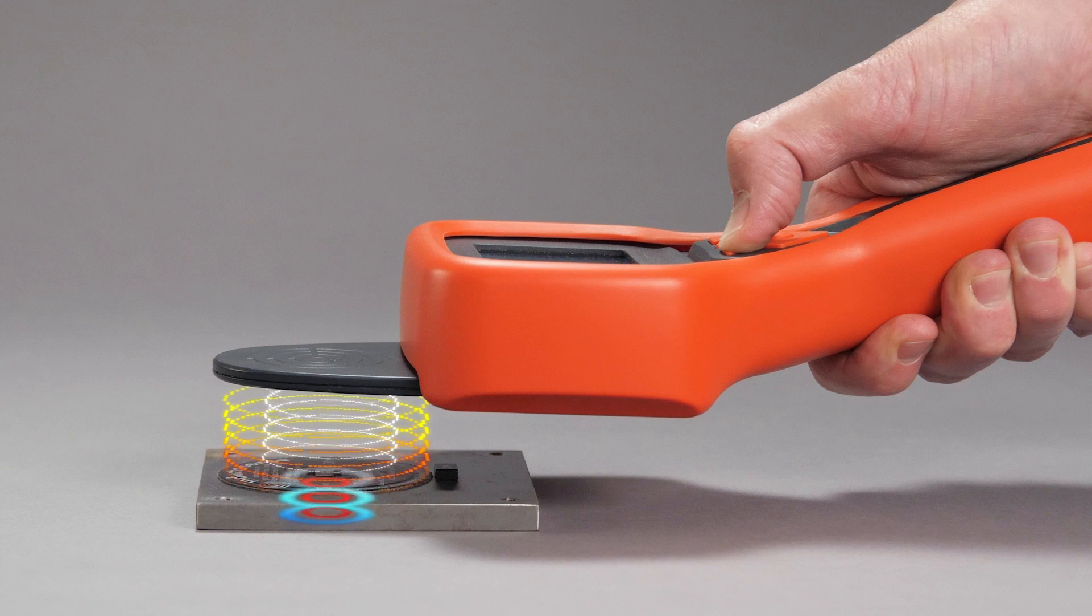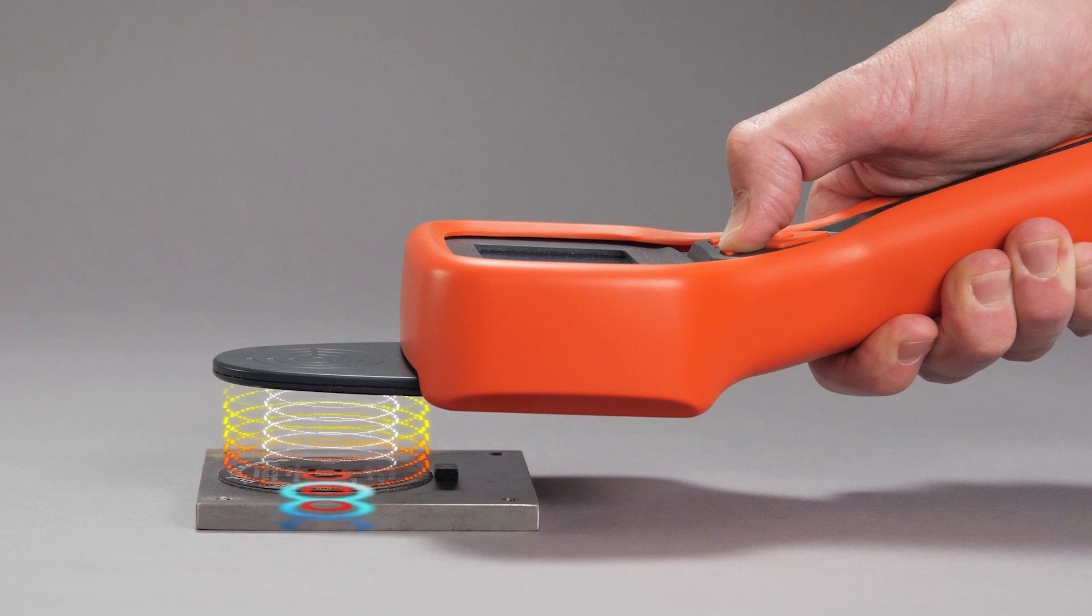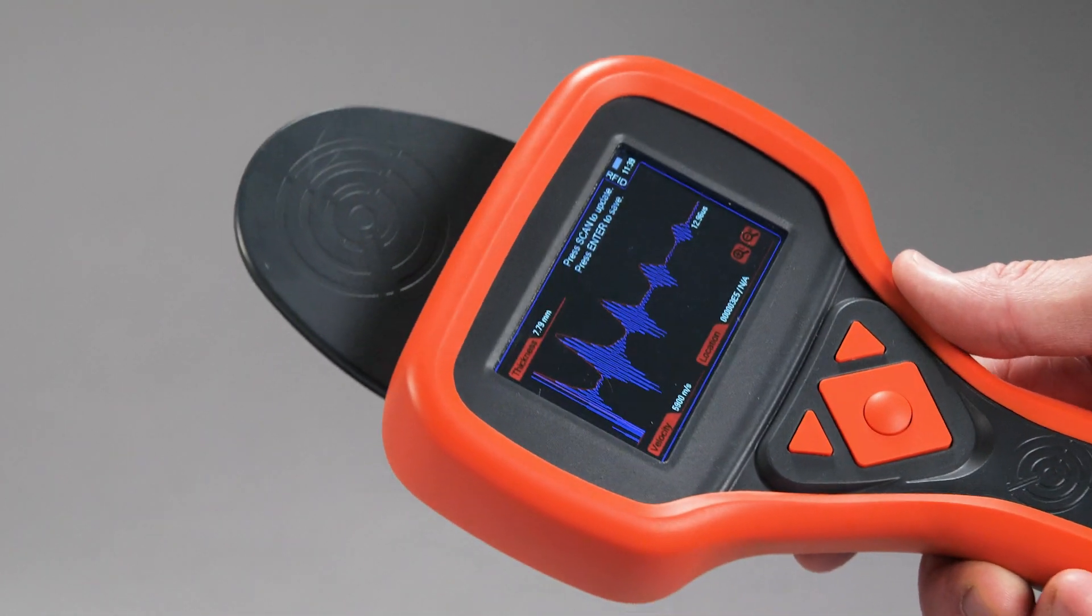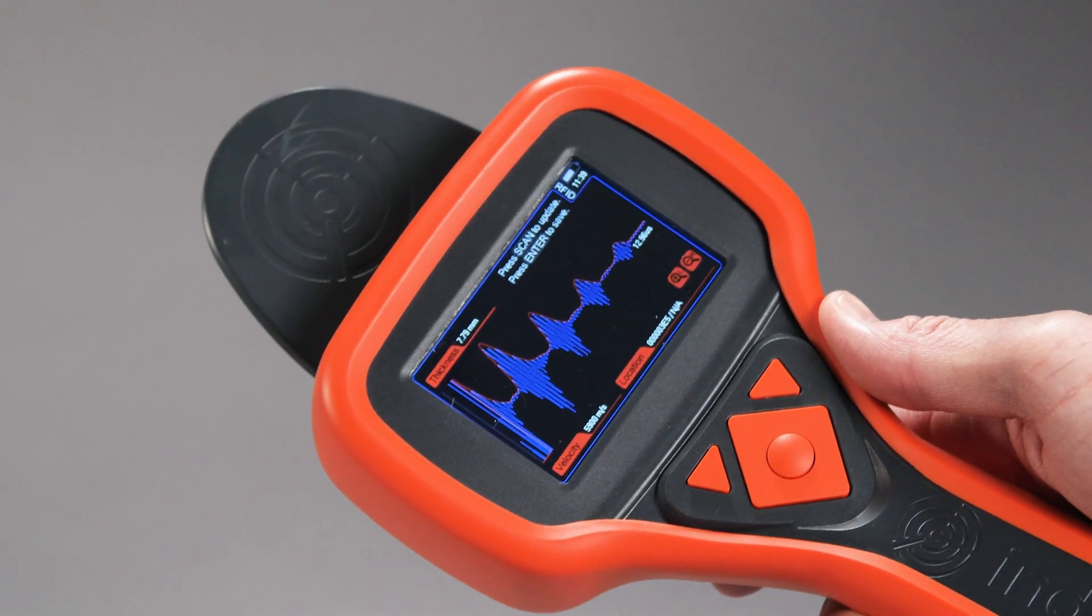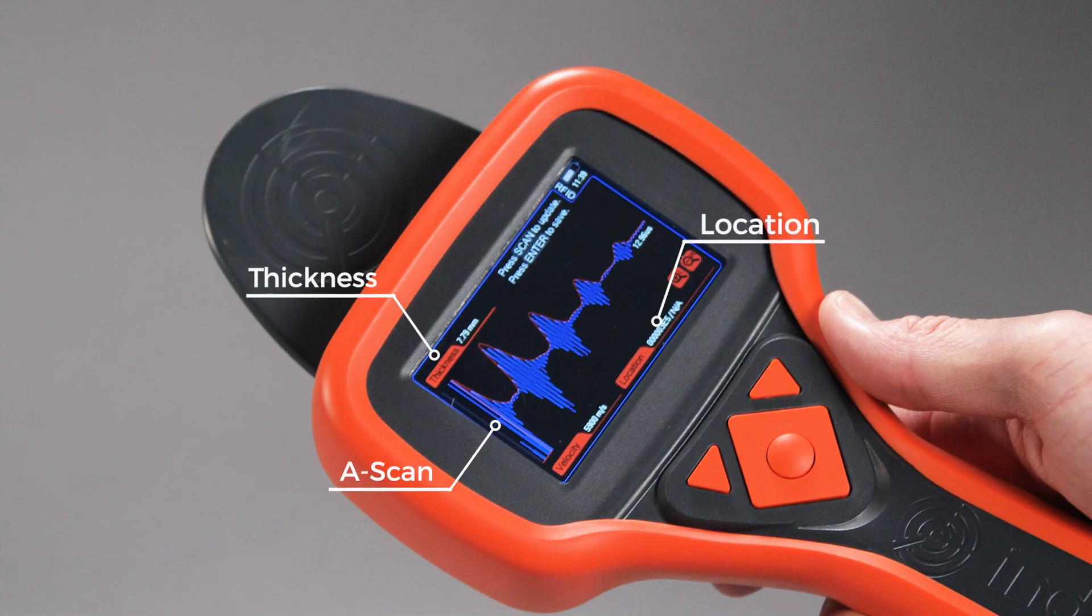At the same time, the installed sensor transmits an ultrasonic signal into the structure and receives the scattered signal. This information is coupled back to the data collector where the ultrasonic A-scan is displayed on the screen along with the thickness of the structure and the location of the sensor.